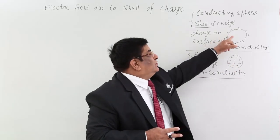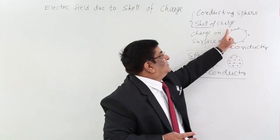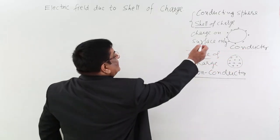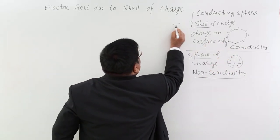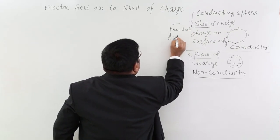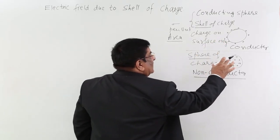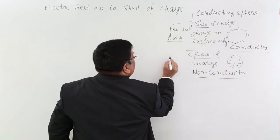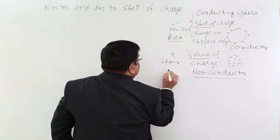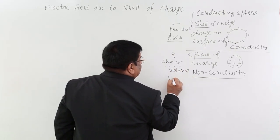In these two cases the measurement is done differently. This is charge on the surface — the charge here is sigma per unit area, and this distribution is aerial distribution. In the other case, the charge is full in the volume, so here I will use rho, that is charge per unit volume, and this is known as volumetric distribution.